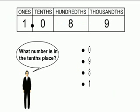What number is in the tenths place for 1 and 89 thousandths? The zero is in the tenths place.